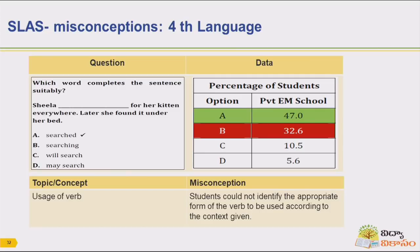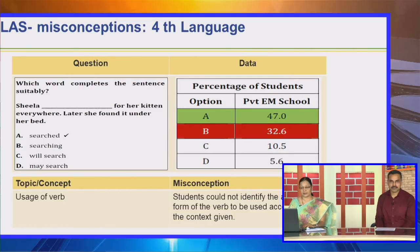Here, the misconception is that students could not identify the appropriate form of the verb to be used according to the context given. They are simply reading and choosing the option. The B option — 'students are searching' — shows they have not read the remaining sentence completely: 'Later, she found it under her bed.' Students did not completely read the sentences, so reading competency needs more focus.